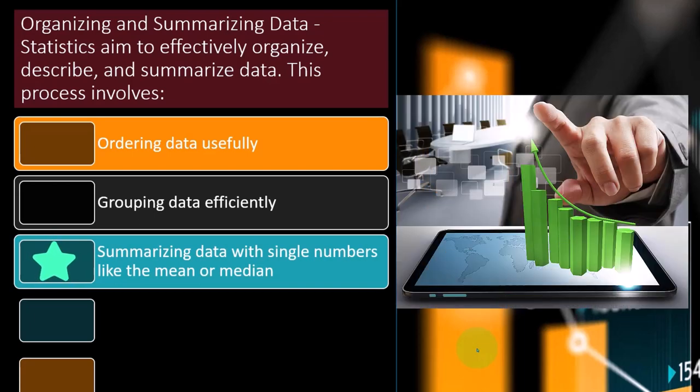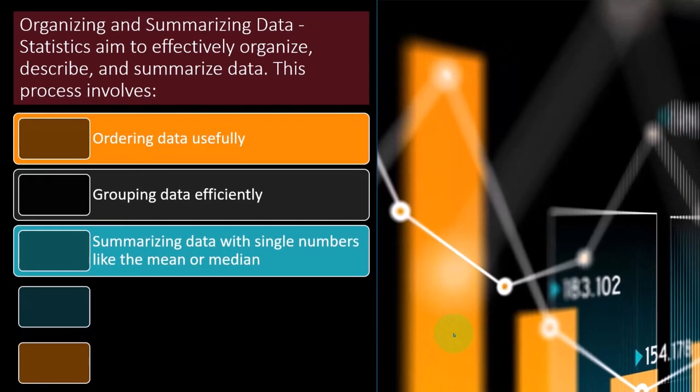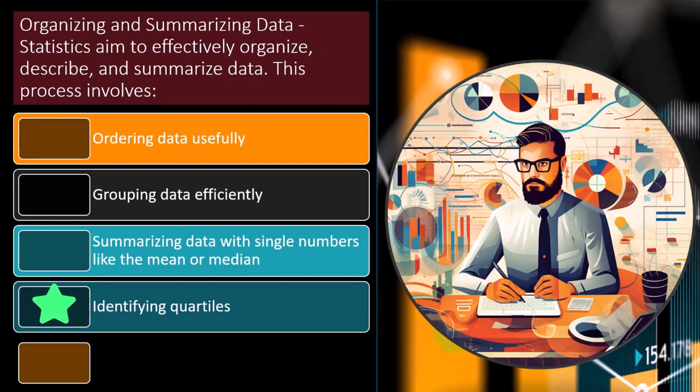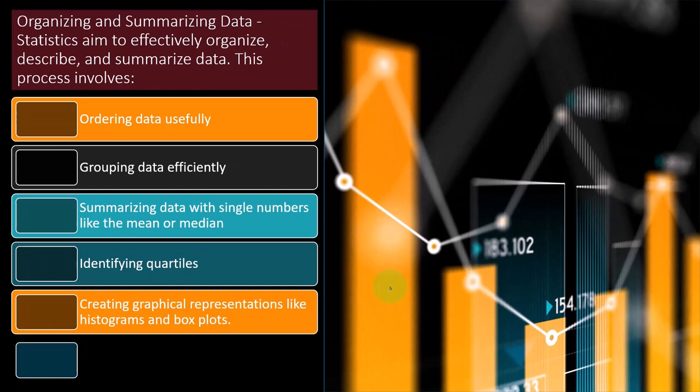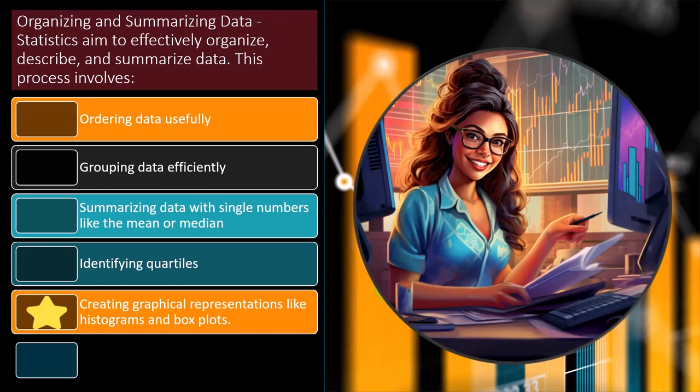Otherwise, the computer doesn't know what we're interested in. So summarizing data with single numbers like the mean or median. So that's not the only thing we want to do. But clearly, that's going to be a key component to be able to use these key numbers, the mean and the median, and then understand the spread around the mean. Identify quartiles. So that's another kind of tool that we can use. We can break the number set out into the mean, the median, quartiles, creating graphical representations like histograms and box plots.